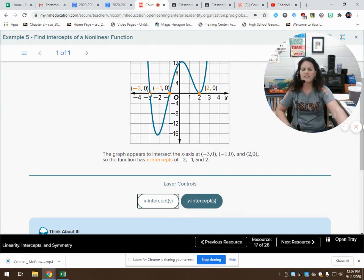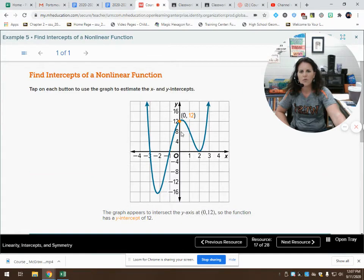Where does it cross my y axis? It looks like it's over here at 12. And that is correct. So what we're looking for, when I'm looking for the y intercept, I'm looking for what is the y value when x is zero? Well, the y value is 12 when x is zero.